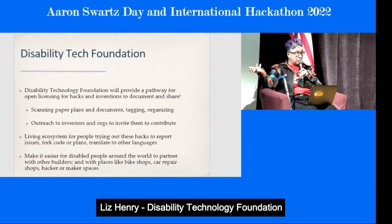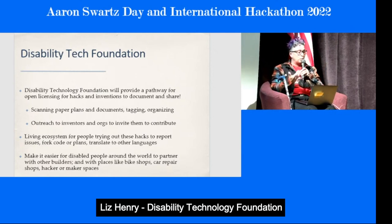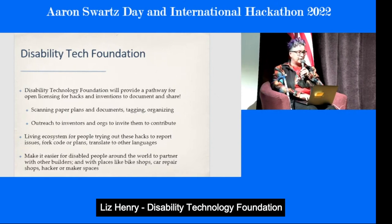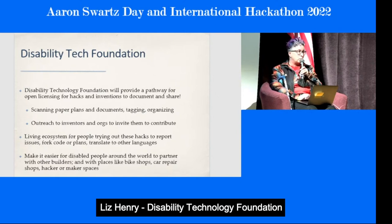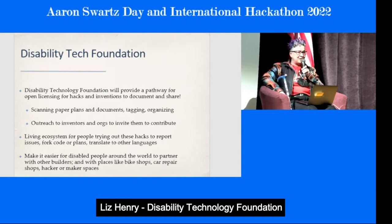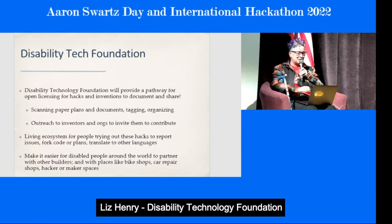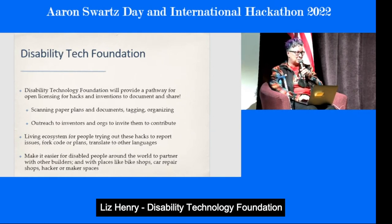Even from the projects doing amazing work, they're missing the piece that makes it a living public ecosystem — where people can report issues, fork the plans or code, create new things, translate inventions and parts lists and manuals into other languages, and make it easier for disabled people around the world to partner with builders. With places like bike shops or car repair shops — I actually need a motorcycle repair shop to make some metal parts for my wheelchair right now. I've had good luck with auto upholstery shops making me cushions, and they always seem to enjoy the creative work.